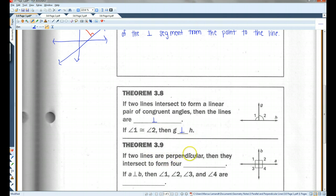Theorem 3.9. If two lines are perpendicular, then they intersect to form four right angles. Okay, so if these two lines are perpendicular, they don't just form one right angle. All four of these angles are going to be congruent. So angles 1, 2, 3, and 4 are all right angles.